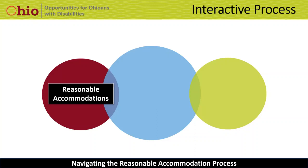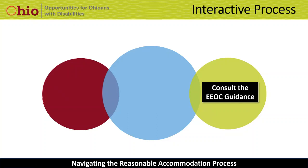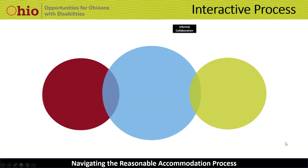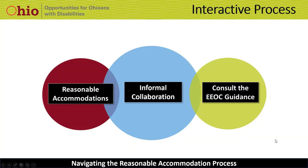To support employers, the EEOC has published several documents that provide guidance on how to navigate Title I. This includes guidance on what constitutes a request for an accommodation, what questions you may ask the applicant or employee, what documentation you can obtain and when, and what is considered reasonable. Neither the ADA nor the EEOC requires you to create a formal process for requesting or providing accommodations. The ADA just requires you engage with the person making the request in an informal collaboration — called the interactive process — to identify an effective solution. While it may not be a requirement, there are helpful guidelines to be aware of and best practices that show how developing a formal process could be beneficial.